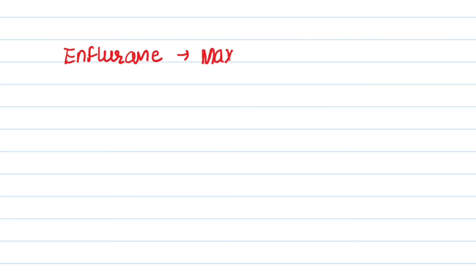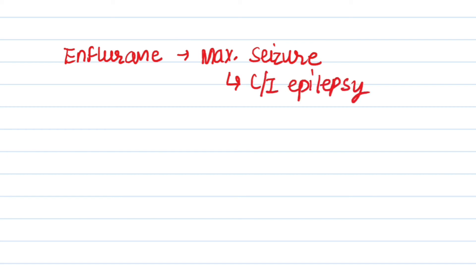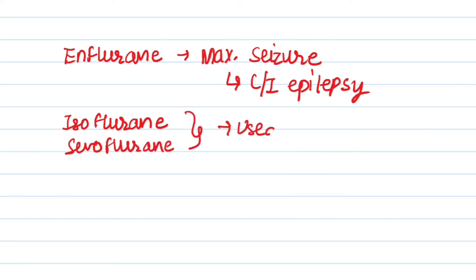The next inhalational agent is enflurane. Enflurane causes maximum seizures, and that is why it is contraindicated in epilepsy. Next, isoflurane and sevoflurane — both are used in cardiovascular surgeries and central nervous system surgeries.